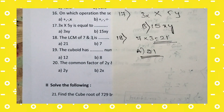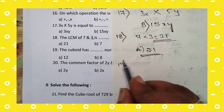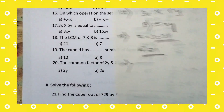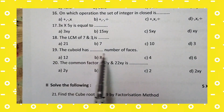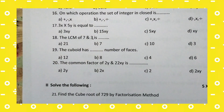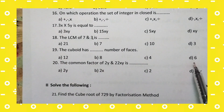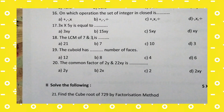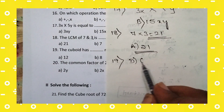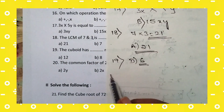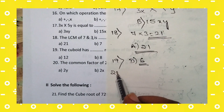19th question: a cuboid has how many faces? The options are 12, 8, 4, and 6. The right answer is option D: 6. A cuboid has 6 faces.